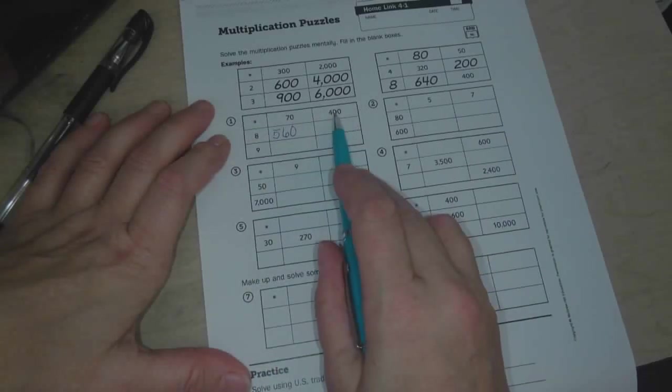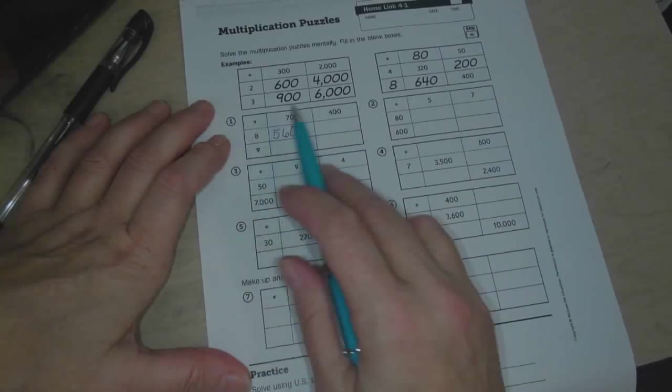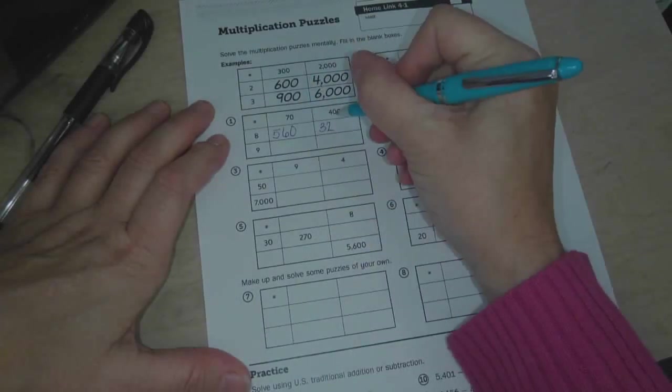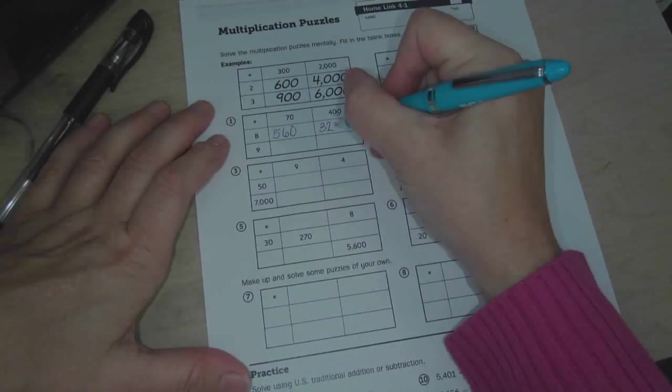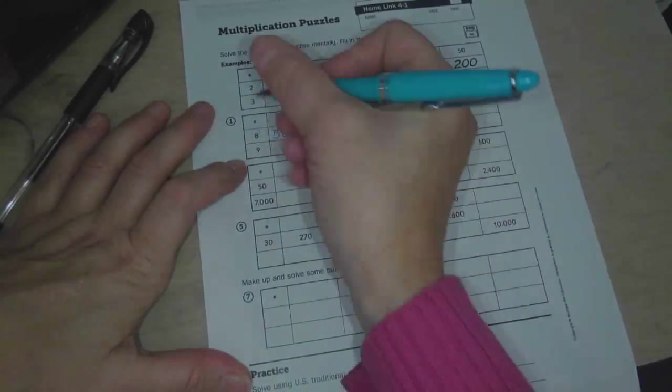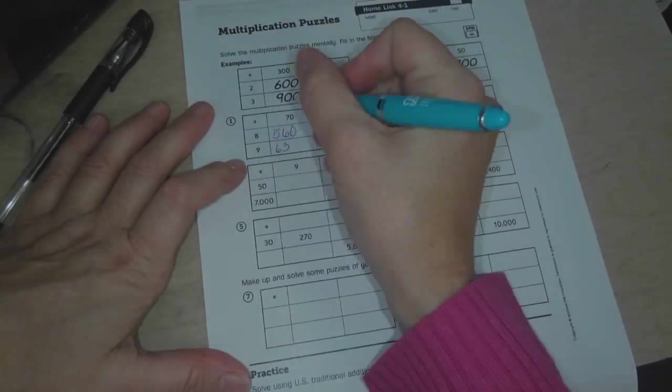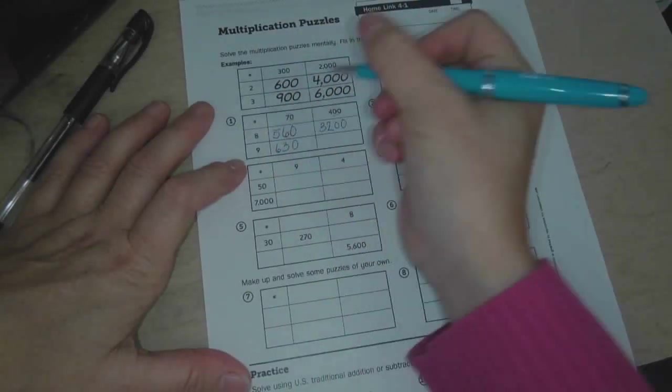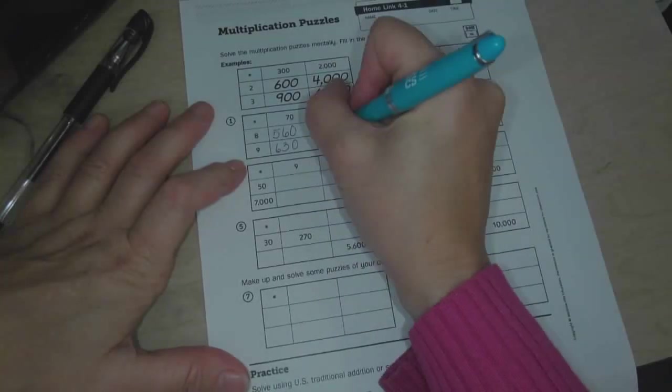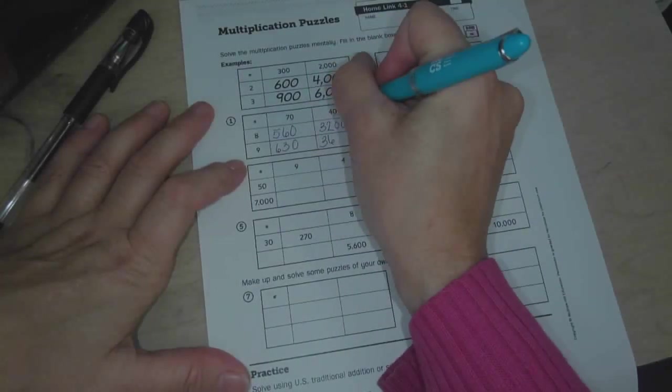8 times 400. So our basic fact, 8 times 4 is 32, and then it's two zeros. 9 times 70. So 9 times 7 is 63, and then it's just one zero. 9 times 400. So 9 times 4 is 36, and then it's two zeros.